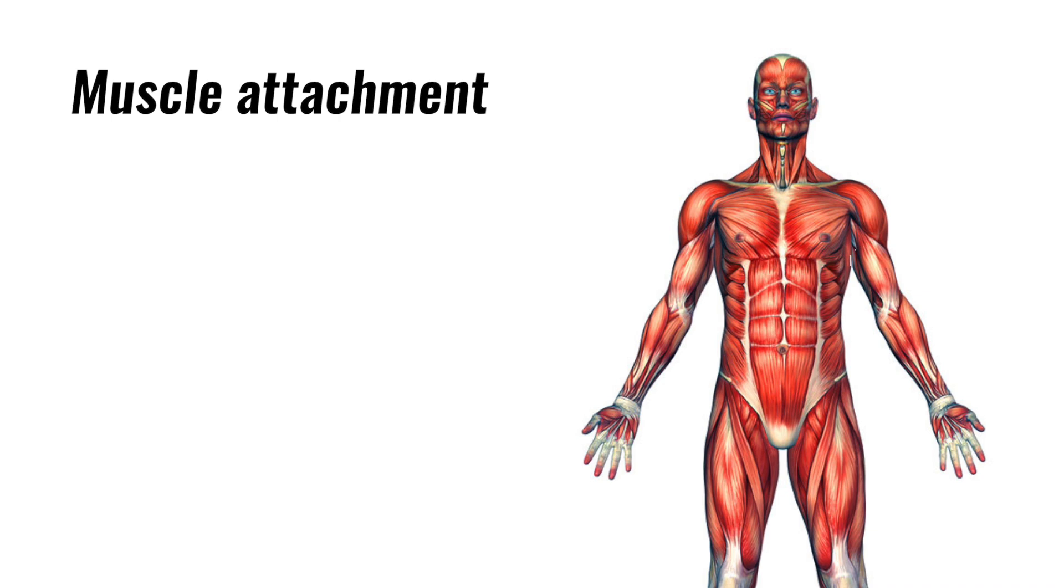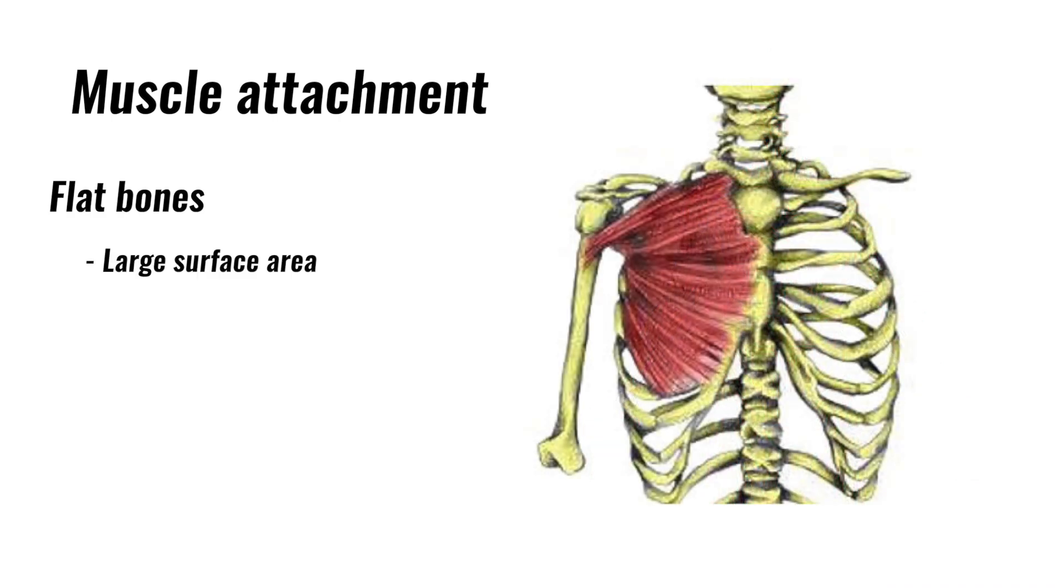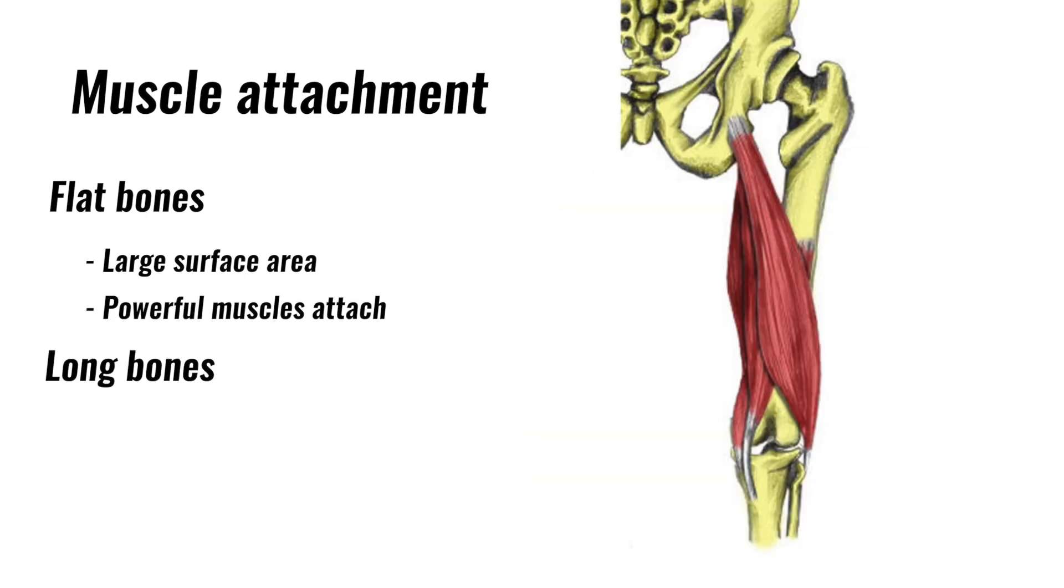Bones provide places where muscles attach, enabling movement. Flat bones provide a large surface area for powerful muscles to attach. Long bones such as the tibia work as levers when muscles attach near the ends, creating a mechanical advantage. This means a small contraction in the muscle can create a very large range of motion.